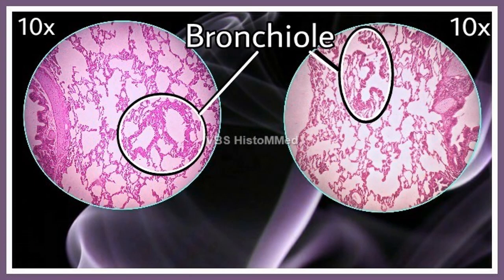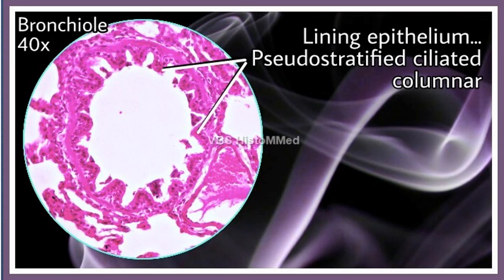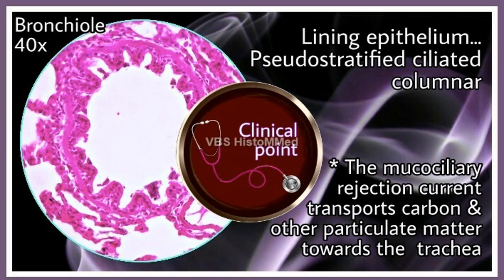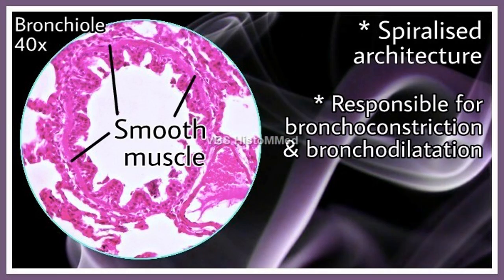There are two photographs here — one is a cross section of the bronchiole, the other a longitudinal section. The lining epithelium of the mucosa continues to be the typical respiratory epithelium: pseudostratified ciliated columnar epithelium — the same as in the bronchus. Because it is ciliated columnar, the mucociliary rejection current transports particulate material like carbon particles upward toward the trachea, helping in the cough process where sputum is expelled.